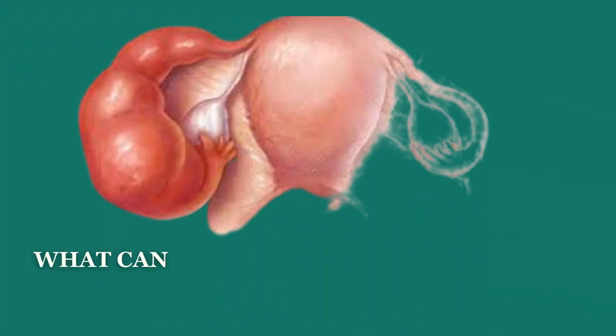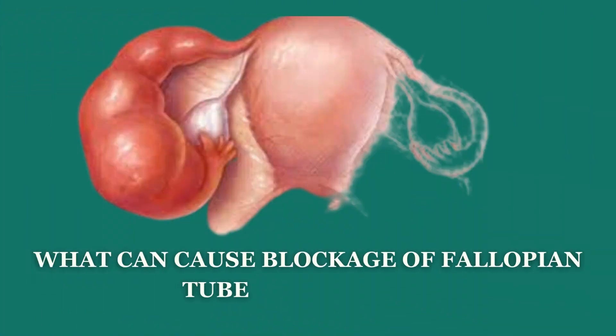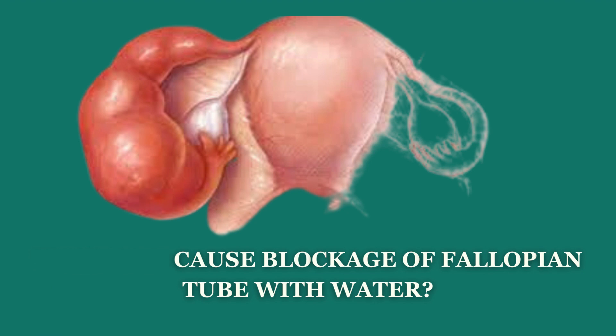Now, what can cause blockage of fallopian tubes with water? What are the things which can lead to a woman having blocked tubes that are also filled with water? Fallopian tubes are blocked by scar tissue formed inside, or by adhesions formed inside. The peristaltic movement of the tube is hindered, and the chances of an egg and sperm meeting become very difficult.